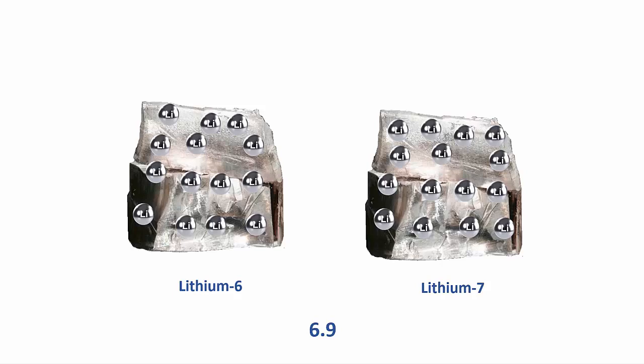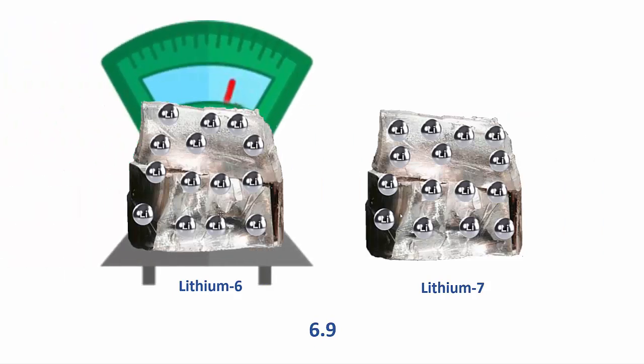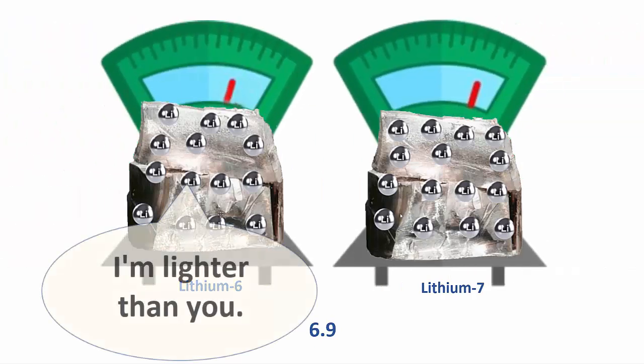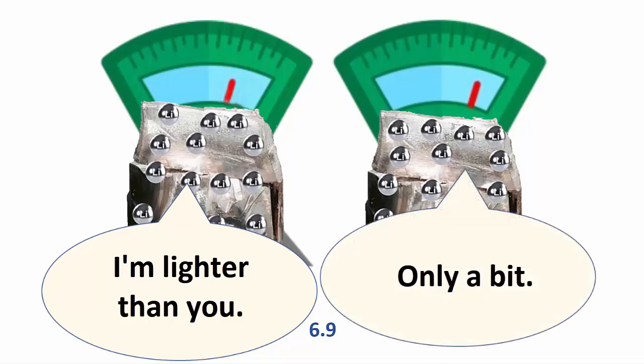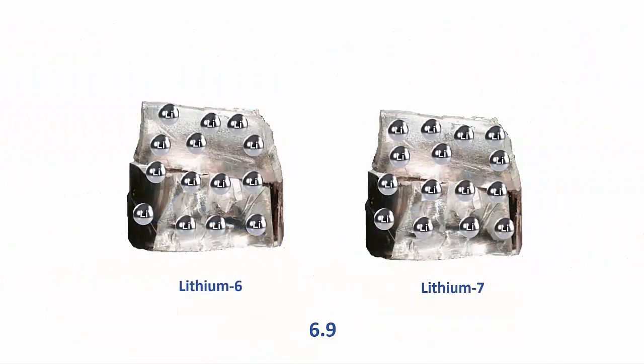The lithium-6 lump will just be a tad lighter than the lithium-7 lump. And explode in water a tad faster than lithium-7 because its lighter atoms can move more quickly. But overall they're like almost identical twins.